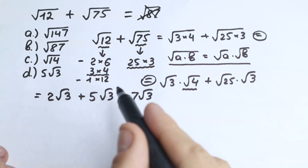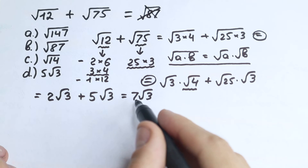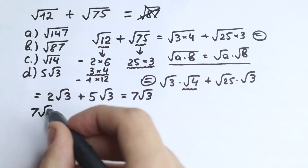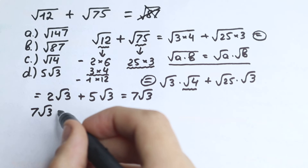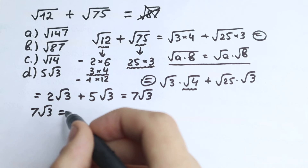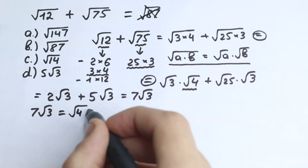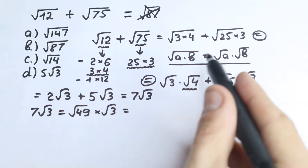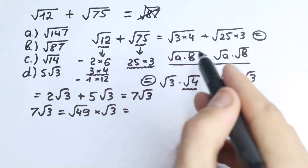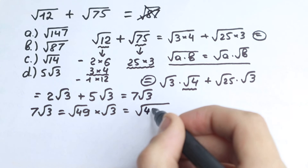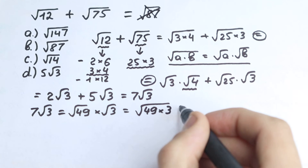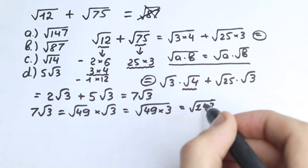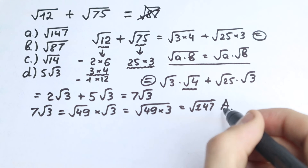This is the really interesting and tricky moment: we need to express 7 square root of 3 in another way. We write 7 as square root of 49, since 7 equals square root of 49. So we have square root of 49 times square root of 3. Now applying the rule in reverse — going back to a common square root — we get square root of (49 times 3), which equals square root of 147. And we have this option: option A is correct!